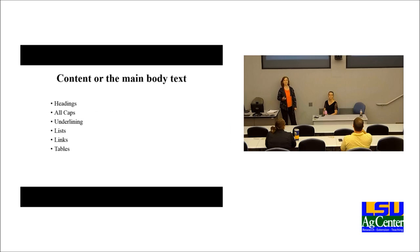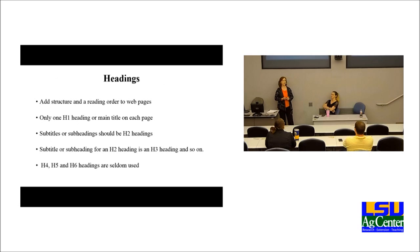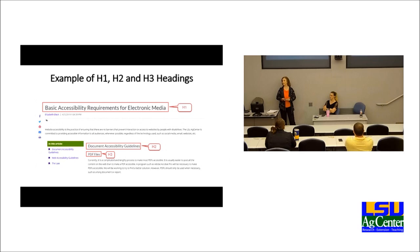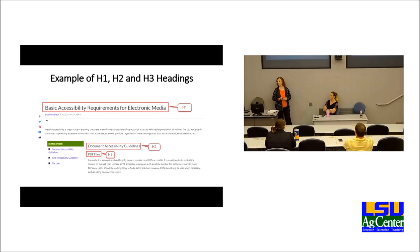Content or main body text has sections underneath it like headings, all caps, underlining, lists, links, and tables. Headings are used to add structure and a reading order to your web pages. There can only be one H1 heading, which is your main title on the page. Underneath the H1 you have subtitles or subheadings, which are H2 headings. If you have subtitles underneath your H2 headings, those are H3 headings and so on. H4, H5, and H6 headings are seldom used.